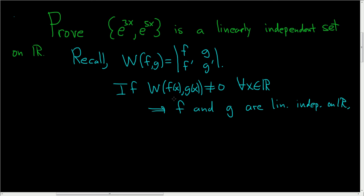What if the Wronskian is zero? Well, it turns out that there's functions that are actually independent and have a zero Wronskian. So you really only want to use this to prove independence. You don't want to use this to show dependence. Okay, let's go ahead and do the proof.